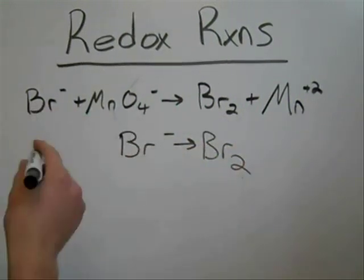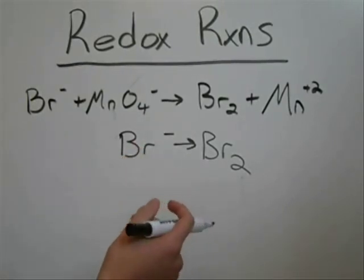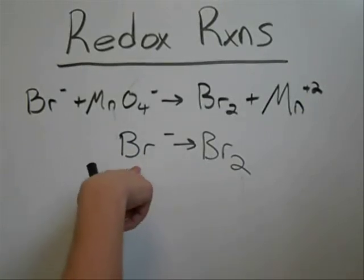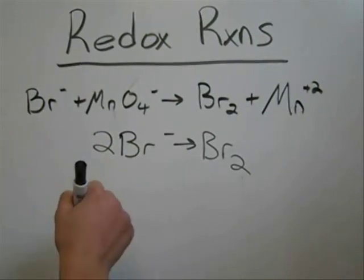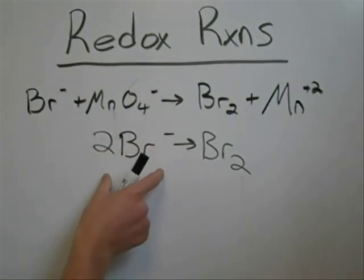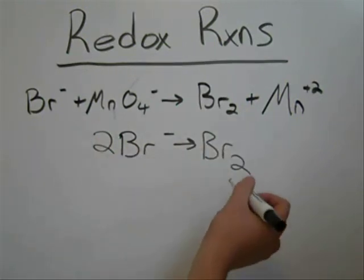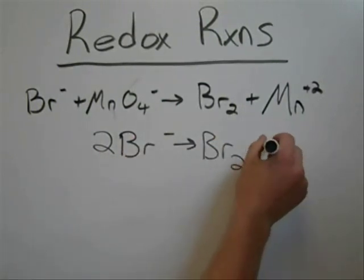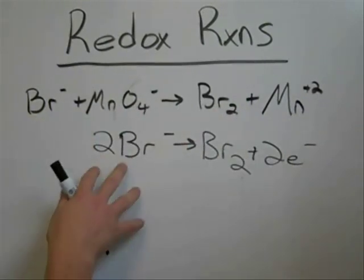Now the first thing you have to do is balance all elements that are not hydrogen or oxygen, which is obviously bromine. So you have two over here and one over here, so you're going to have to put a two there. Now since this is minus and you have two of them, the charge over here is now negative two, and over here is zero. You counteract charge by adding electrons. So it's negative two over here, so you have plus two electrons on the right side now. This one's finished.